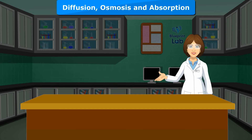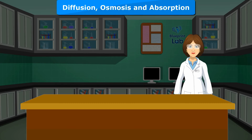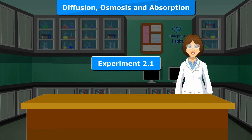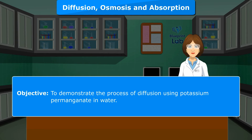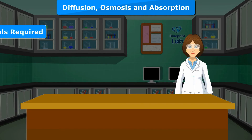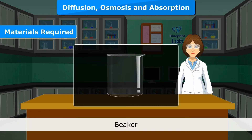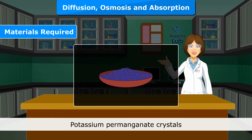Diffusion, Osmosis and Absorption. Experiment 2.1 Objective: To demonstrate the process of diffusion using potassium permanganate in water. Materials Required: Beaker, Water, Potassium permanganate crystals.